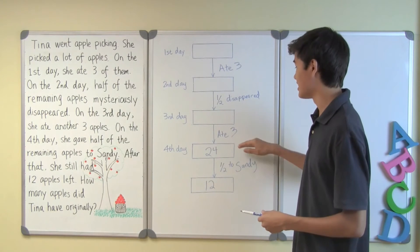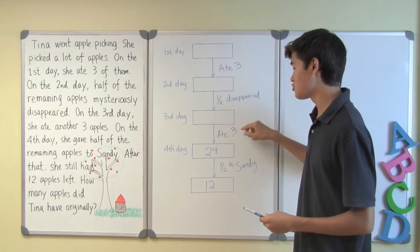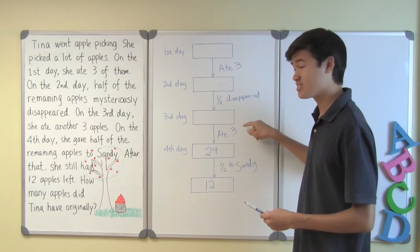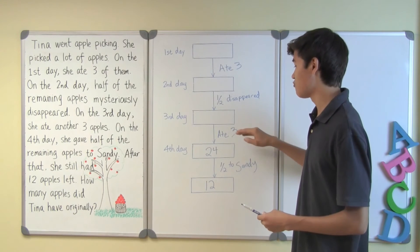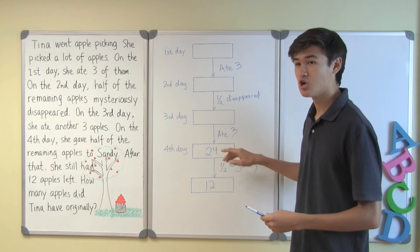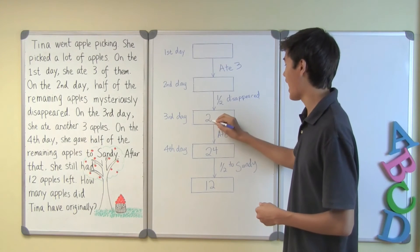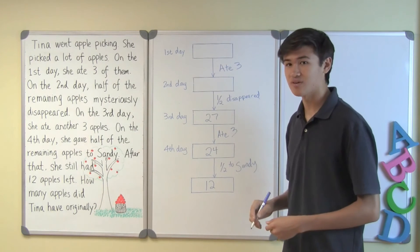Let's go up to the next step. So after she eats, after Tina eats three apples, she's left with 24 apples, which means she must've had 27 apples before she ate three of them.